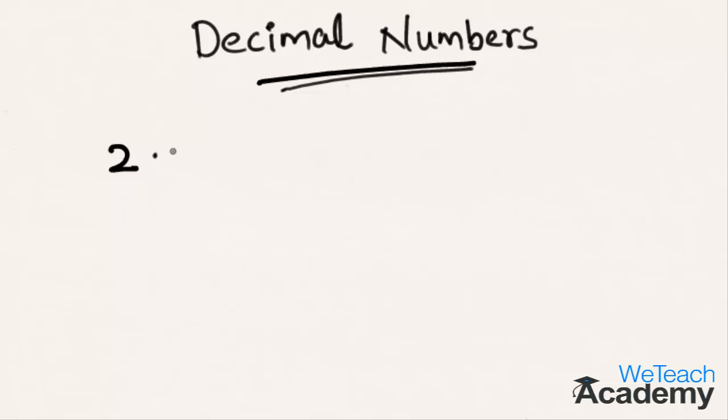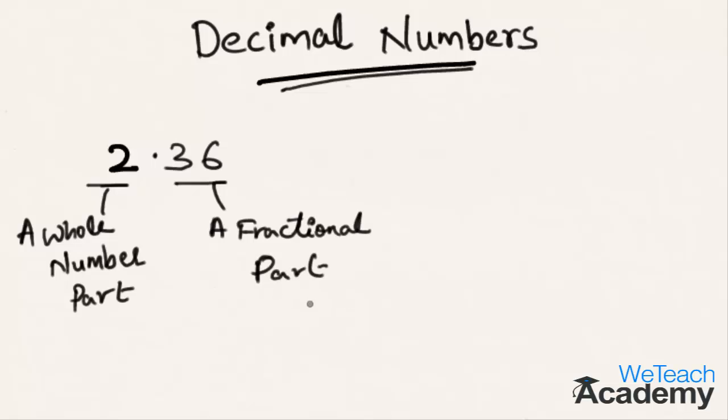Let us consider the decimal number 2.36. If you observe, it consists of two parts - a whole number part and a fractional part. These two parts are separated by a point which is called the decimal point. Now let me give you a few more examples of decimal numbers.